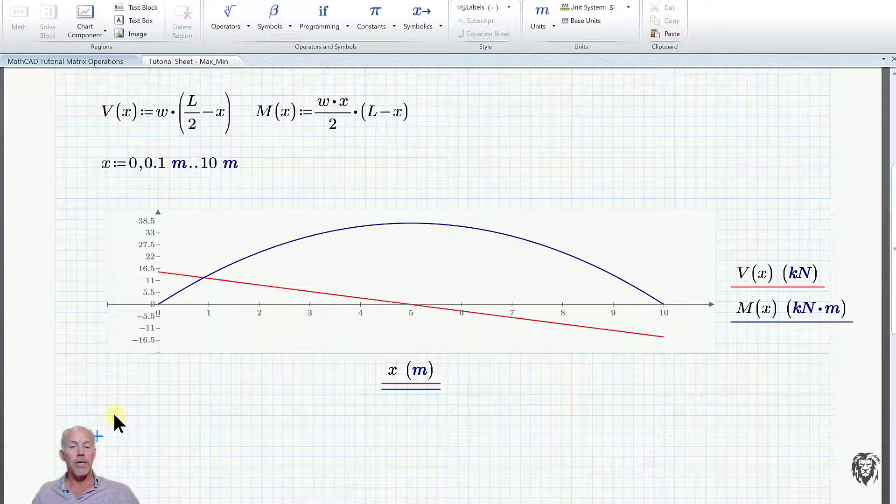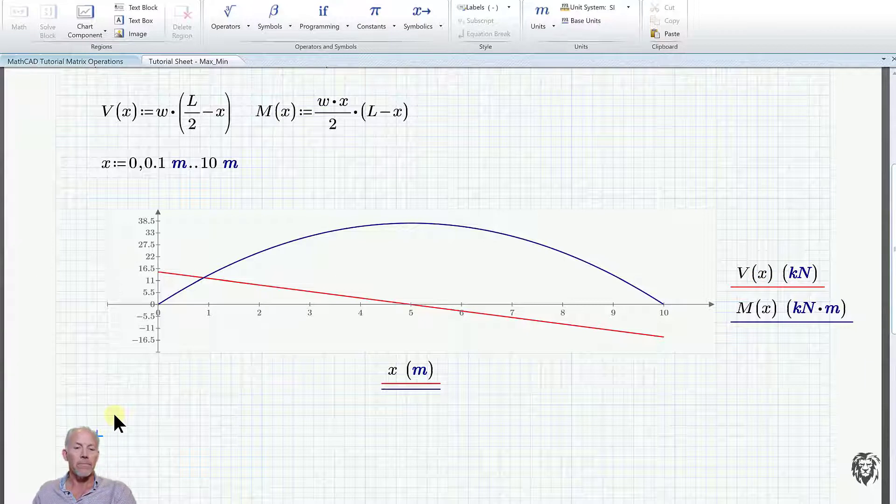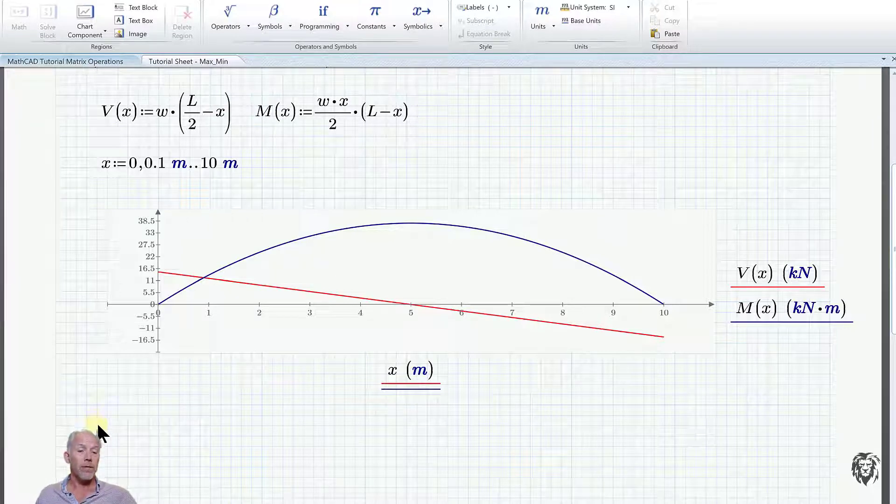And what Matt does, he says, well, I know that the maximum moment occurs at mid-span. So he was able to plug in L over 2 for X and calculate what M was. But he postulated, what if I didn't know? Maybe there is a way that MathCAD would be able to figure that out for him. So that's what I'm going to try to do here today.